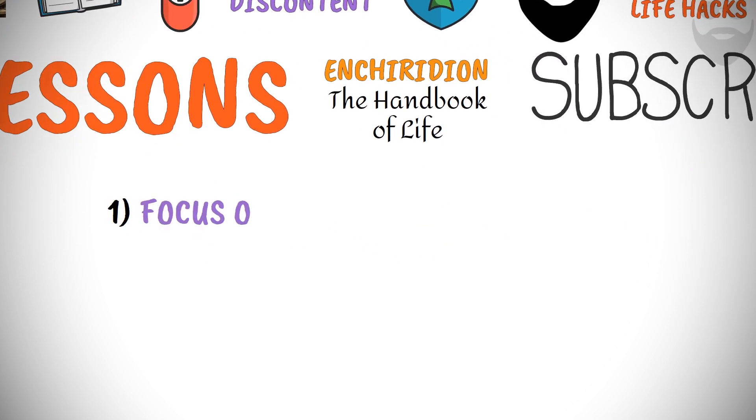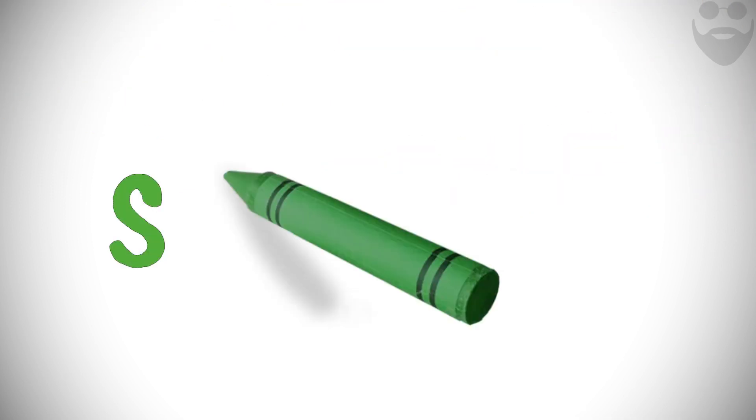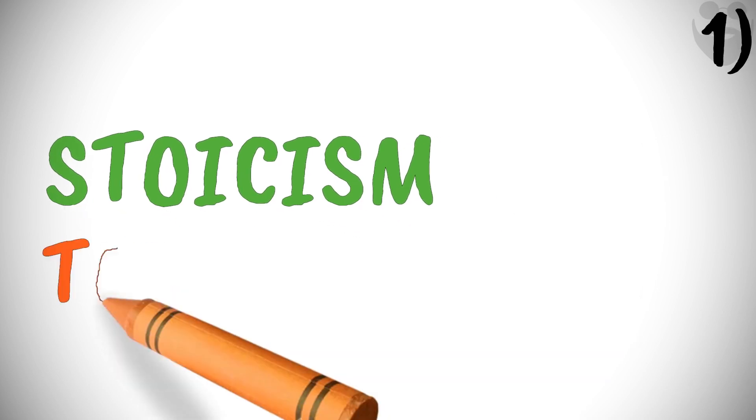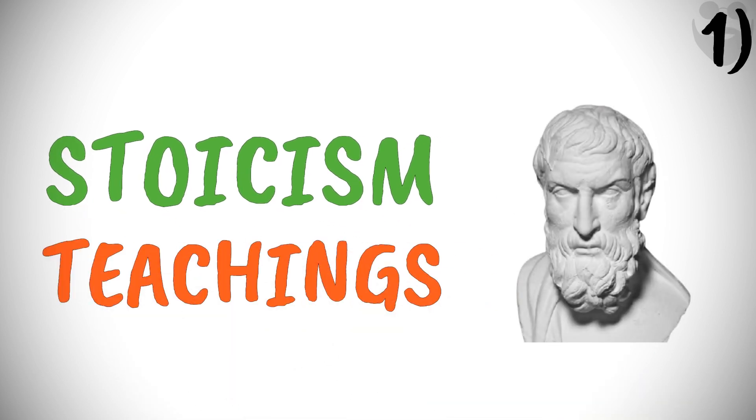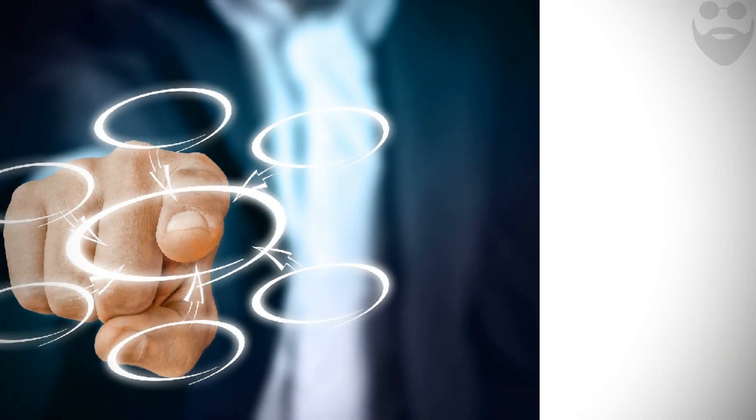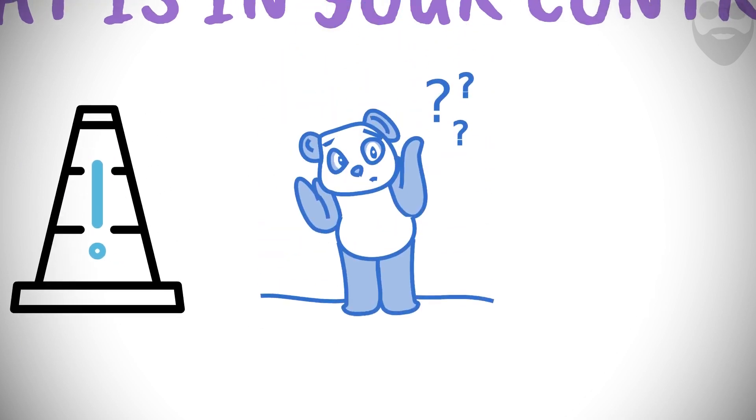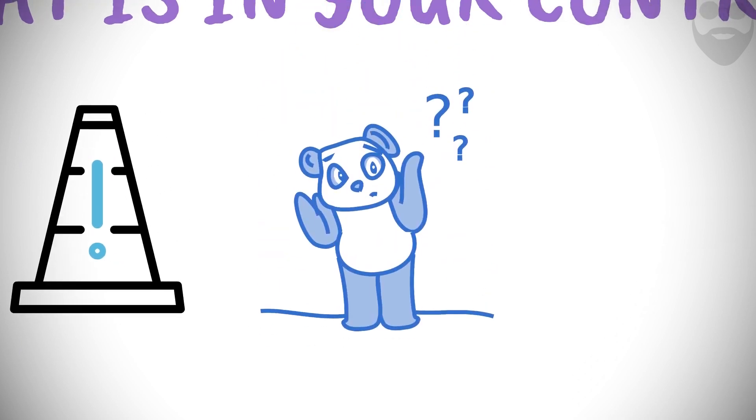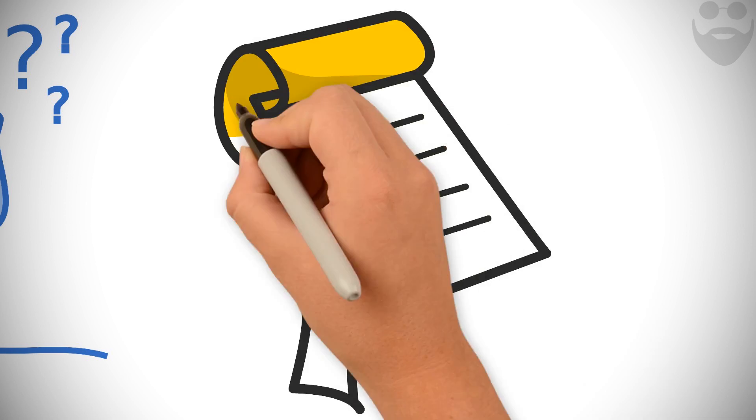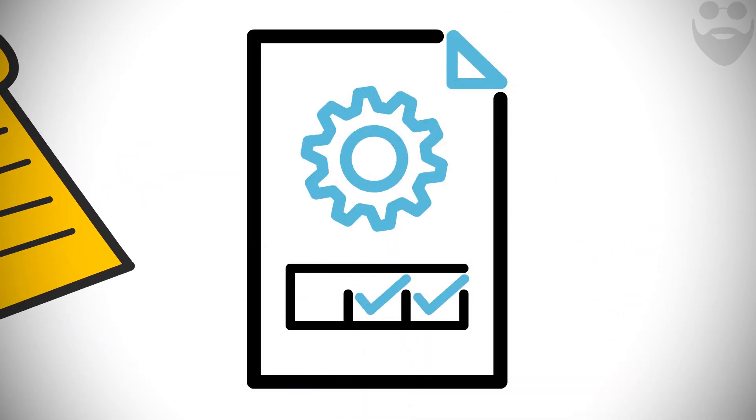1. Focus on what is in your control. Stoicism in general, and the teachings of Epictetus in particular, are centered on this theme. Put all your energies into what you can control and show the Stoic indifference to what you cannot control. But what is in our control and what's out of our control? In the golden words of Epictetus,